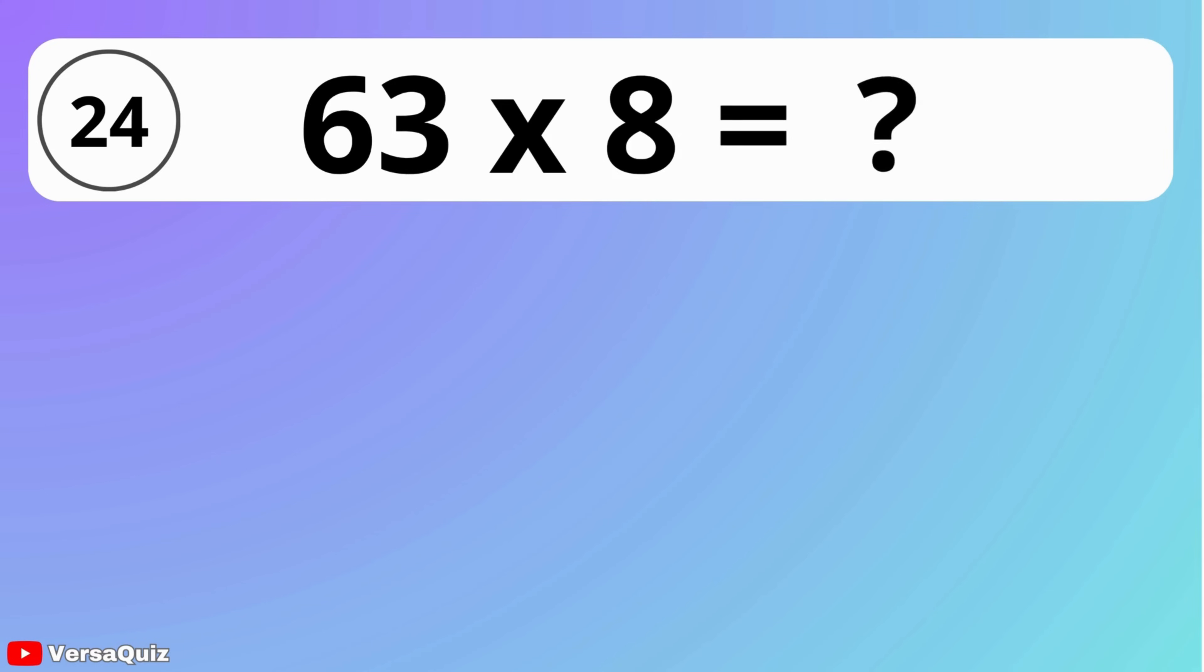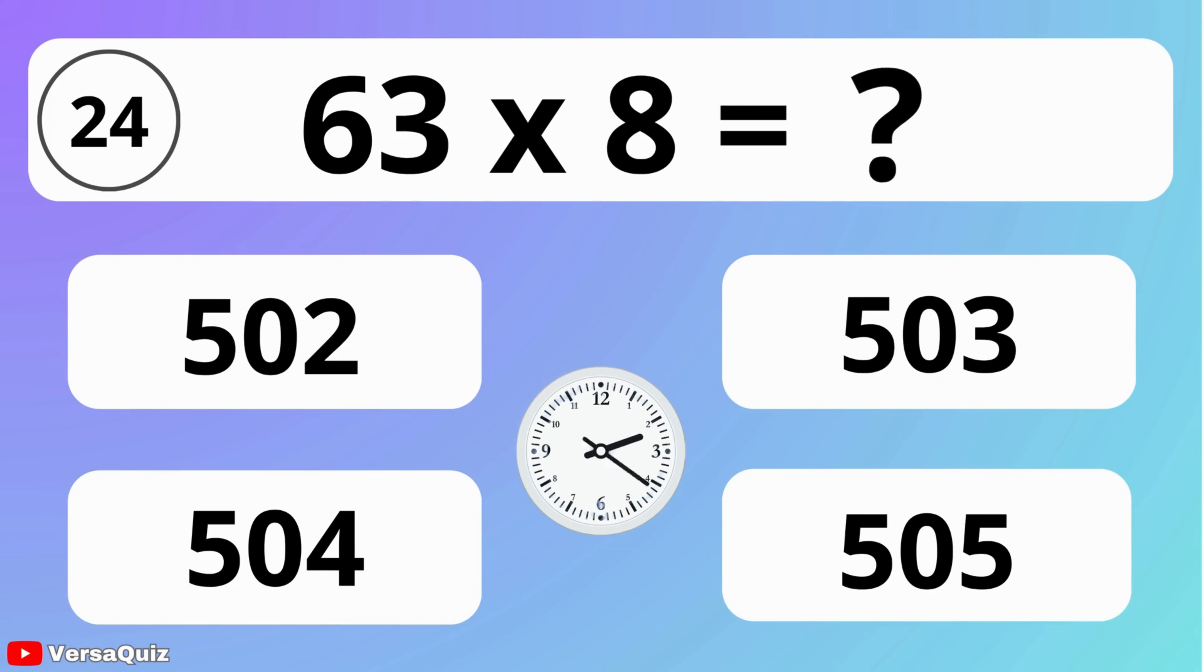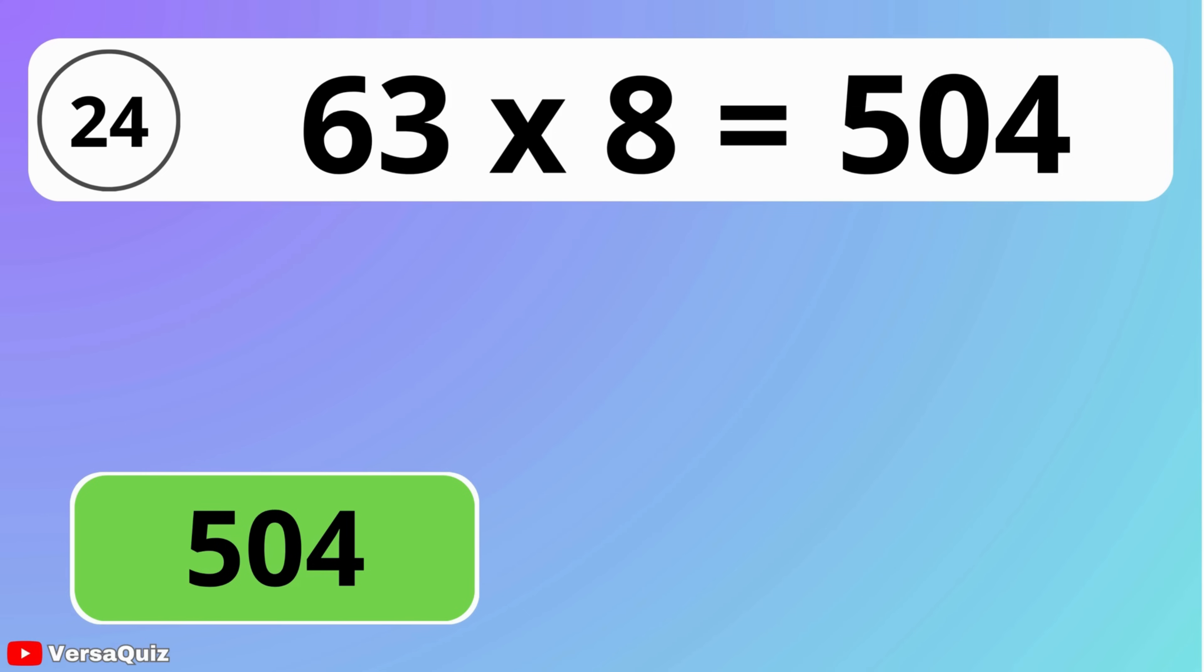What is 63 times 8? Select an answer from the provided options in the next 7 seconds. 63 times 8 is equal to 504.